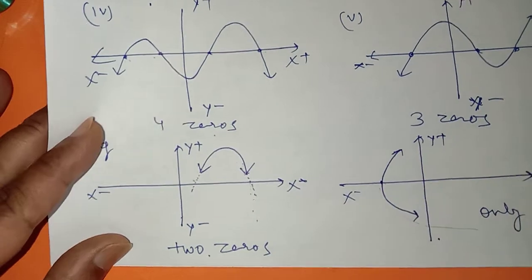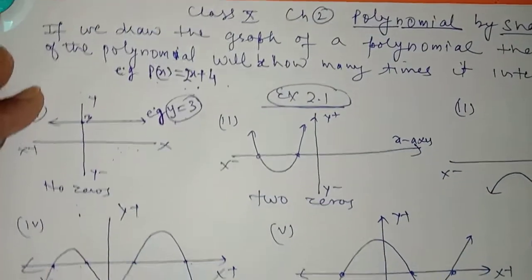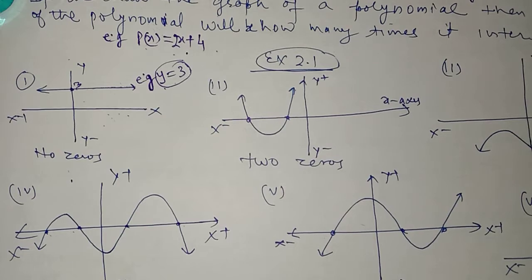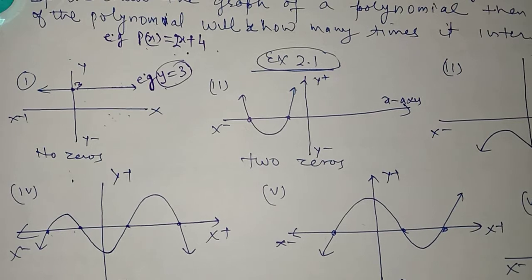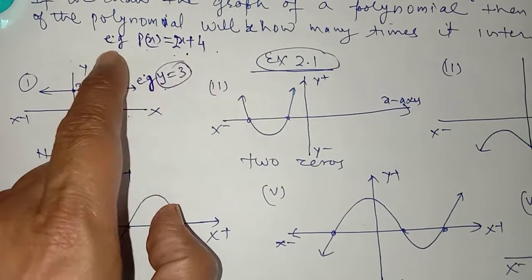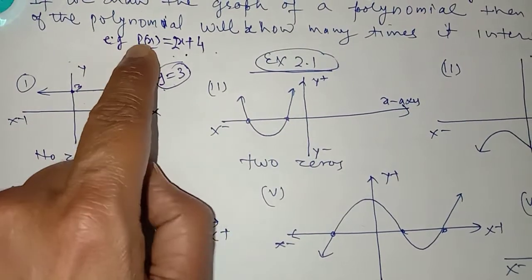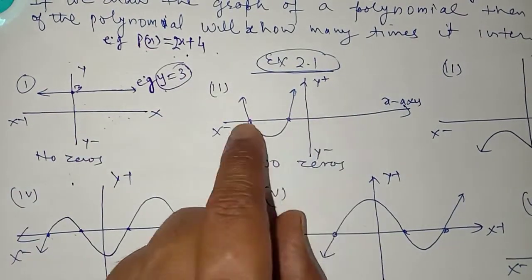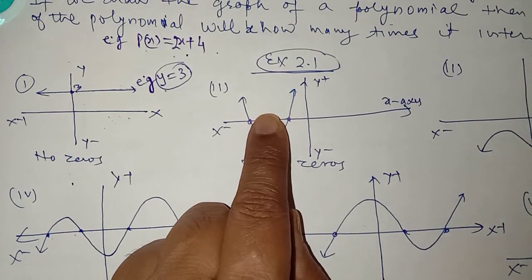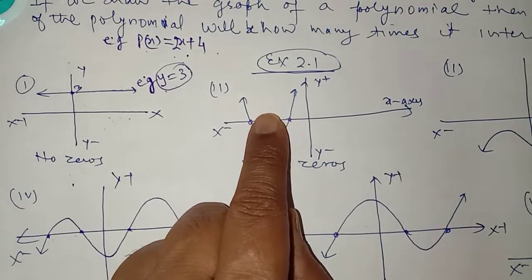So, this one will have only one zero. To find the zeros or the roots or the solution of a polynomial graphically, the number of zeros will be the number of points it intersects the x-axis. Why the x-axis? Because if we draw the graph and let the polynomial equal y, putting y equal to zero gives the x-axis, so the number of zeros is obtained from the points where it intersects the x-axis.